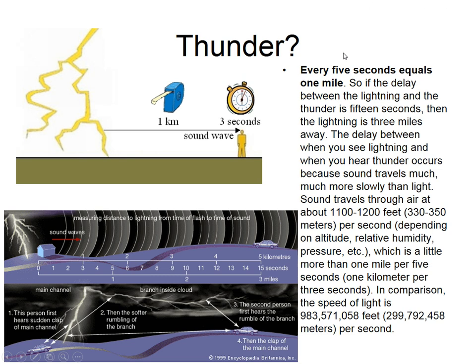Every five seconds between when you see the lightning and when you hear the thunder equals one mile. So if you see a lightning bolt and then ten seconds later you hear thunder, that means the lightning struck two miles away. If there were fifteen seconds between the lightning and thunder, it was three miles away.